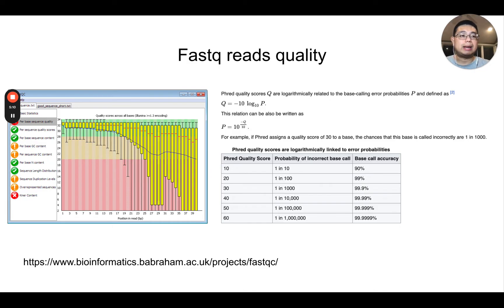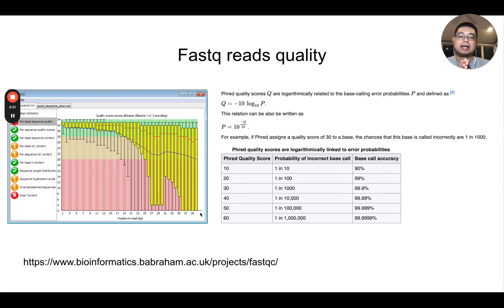Let's talk a bit about quality control. This is the output from FASTQC, one of the most commonly used tools for quality control of your raw FASTQ files. In this plot, the x-axis is the position of the bases — in this case, position 1 to 40, so the reads are 40 base pairs long. The y-axis is the quality score of each base, also called the Phred quality score. It is calculated by this formula: minus 10 times log base 10 of p, where p is the probability of an incorrect base call.